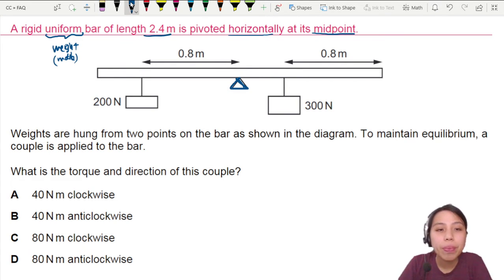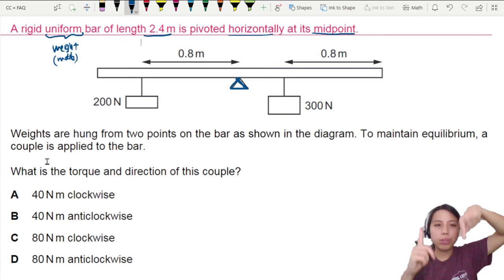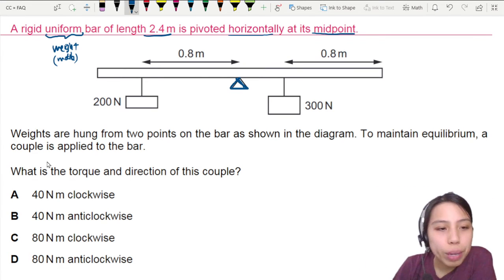Weights are hung. Two weights here, a 200 and a 300. To maintain equilibrium though, a couple, force of a couple, means either opposite direction but at same magnitude, either this way or this way, need to be applied.